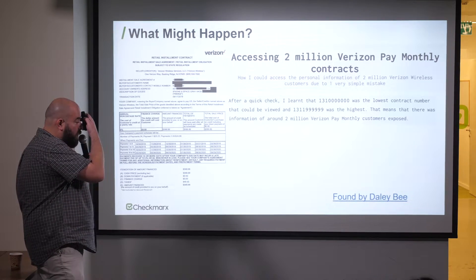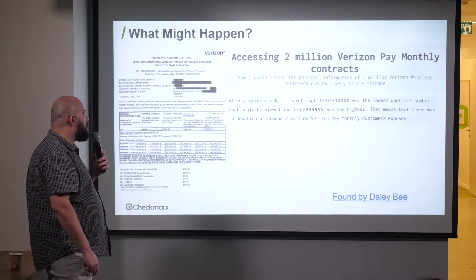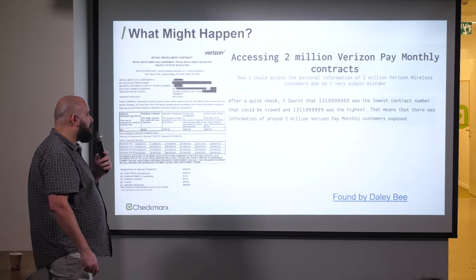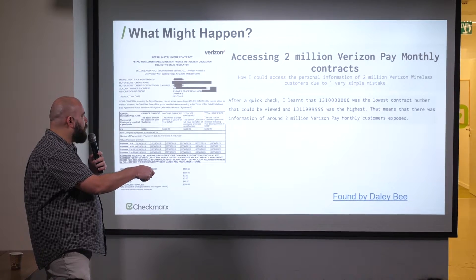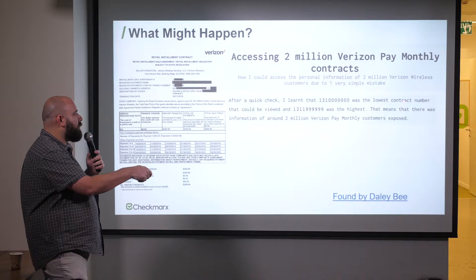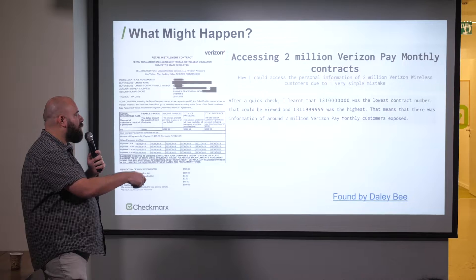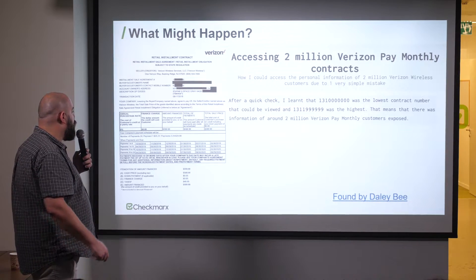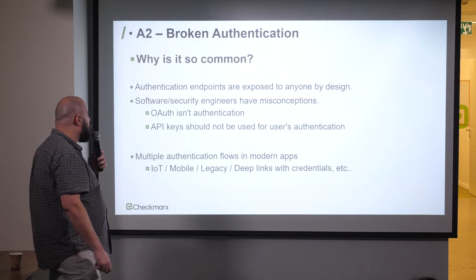A real example: Verizon recently had a breach. A researcher named Dali B managed to access 2 million Verizon pay monthly contracts. He found the scope of numbers describing contract numbers, enumerated them, and got all the information from all 2 million Verizon customers — just by calling specific objects he was not authorized to access.